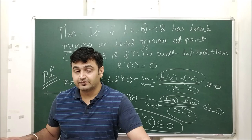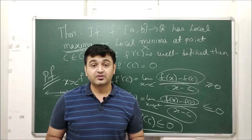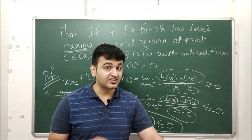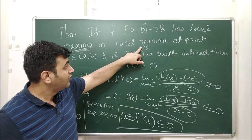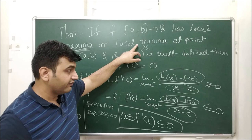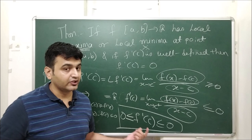Thus, if a function has a local maximum at a point and the derivative is well-defined there, then the derivative must be 0. I hope you understood the concept of local extreme values, their connection with global extreme values, and the connection between extreme values and the derivative. For homework, prove the analogous result for local minima — in that case the inequalities flip and you reach the same conclusion. If you get stuck, ask in the comment section. Please like, share, and subscribe. Have a nice day!